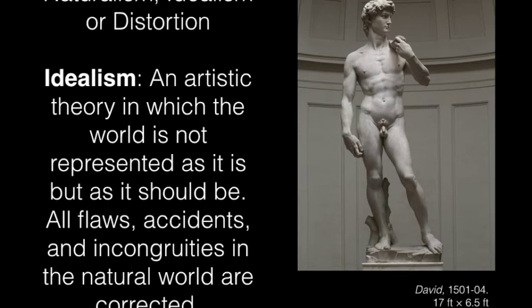In contrast, we have idealism. Idealism is an artistic theory in which the world is not represented as it is, but as it should be — all flaws, accidents, and incongruities in the natural world are corrected. This is Michelangelo's famous sculpture The David. Idealism and naturalism often get confused. Lots of times, objects and people are portrayed as being natural, but they're actually idealistic. The David is supposed to be a rendering of a human body, but it's really not as the human body is — it's as the artist wants it to be. It's an idealized human body.